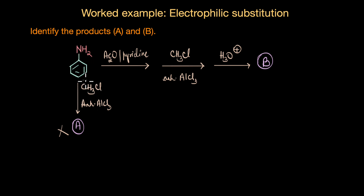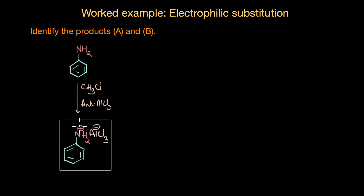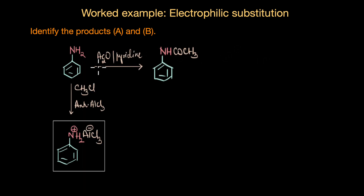Aniline does not undergo Friedel-Crafts alkylation. Although NH2 is strongly activating and should direct the incoming electrophile CH3⁺ to ortho and para positions, the reaction doesn't happen. This is because the lone pair on nitrogen allows it to act as a Lewis base, and anhydrous AlCl3 is a strong Lewis acid. The lone pair on nitrogen interacts with AlCl3 and forms a complex, and this complex formation prevents the Friedel-Crafts reaction from taking place.